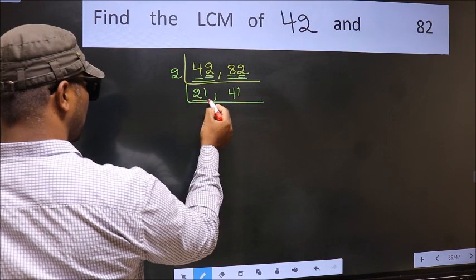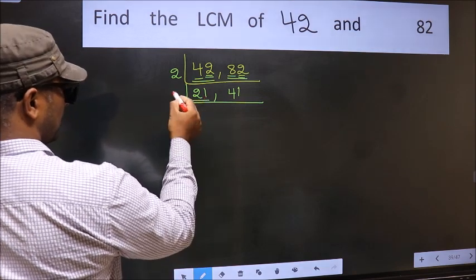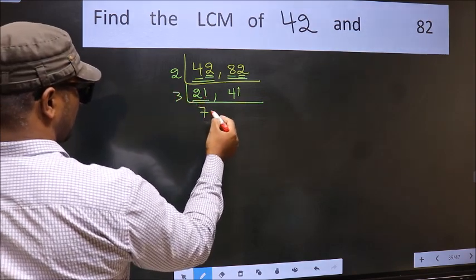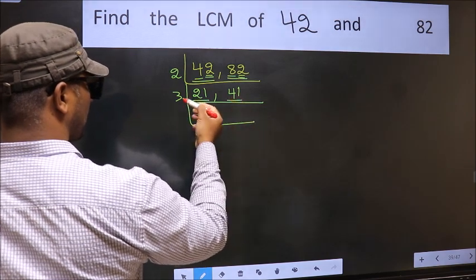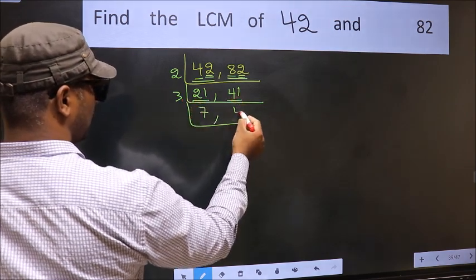Now here we have 21. 21 is 3 times 7 is 21. The other number 41, not divisible by 3, so we write it down as it is.